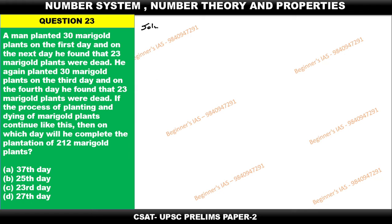Let us check the solution with simple logic. Understand one thing: on the first day he is planting 30. On the second day he is not planting anything, but you can see that 23 died.